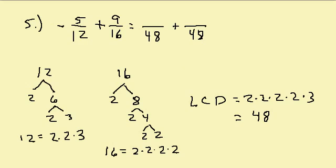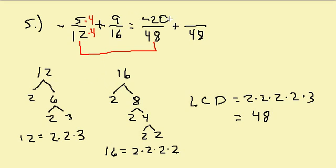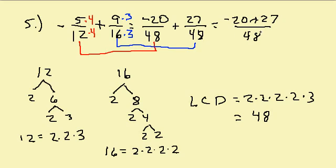What do we multiply to the denominator 12 to get 48? That would be 4, so we multiply the numerator by 4: 4 times negative 5 is negative 20. What do we multiply to the denominator 16 to get 48? That's 3, so we multiply the numerator by 3: 9 times 3 is 27. So we have negative 20 plus 27 over the common denominator 48, which equals 7 over 48.